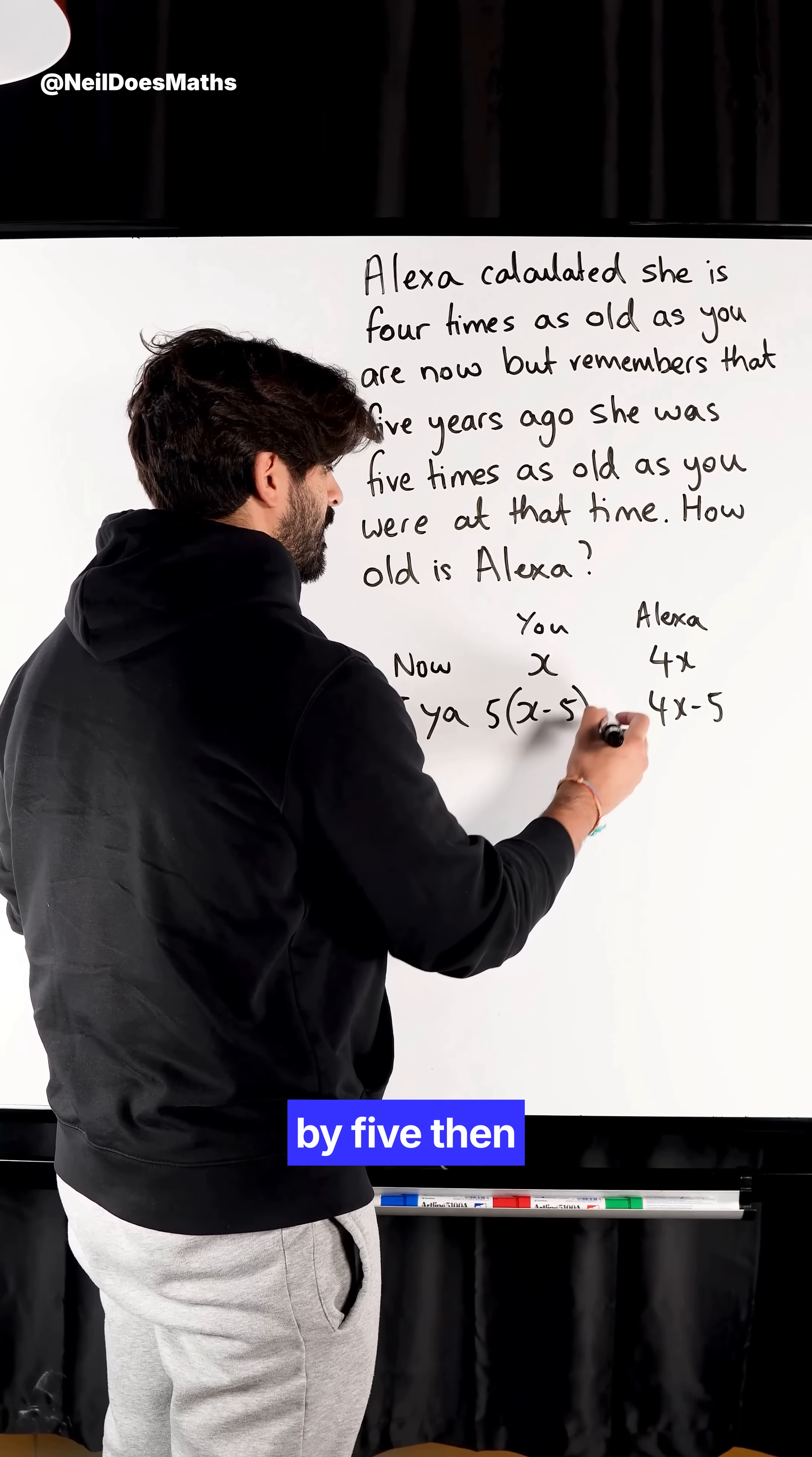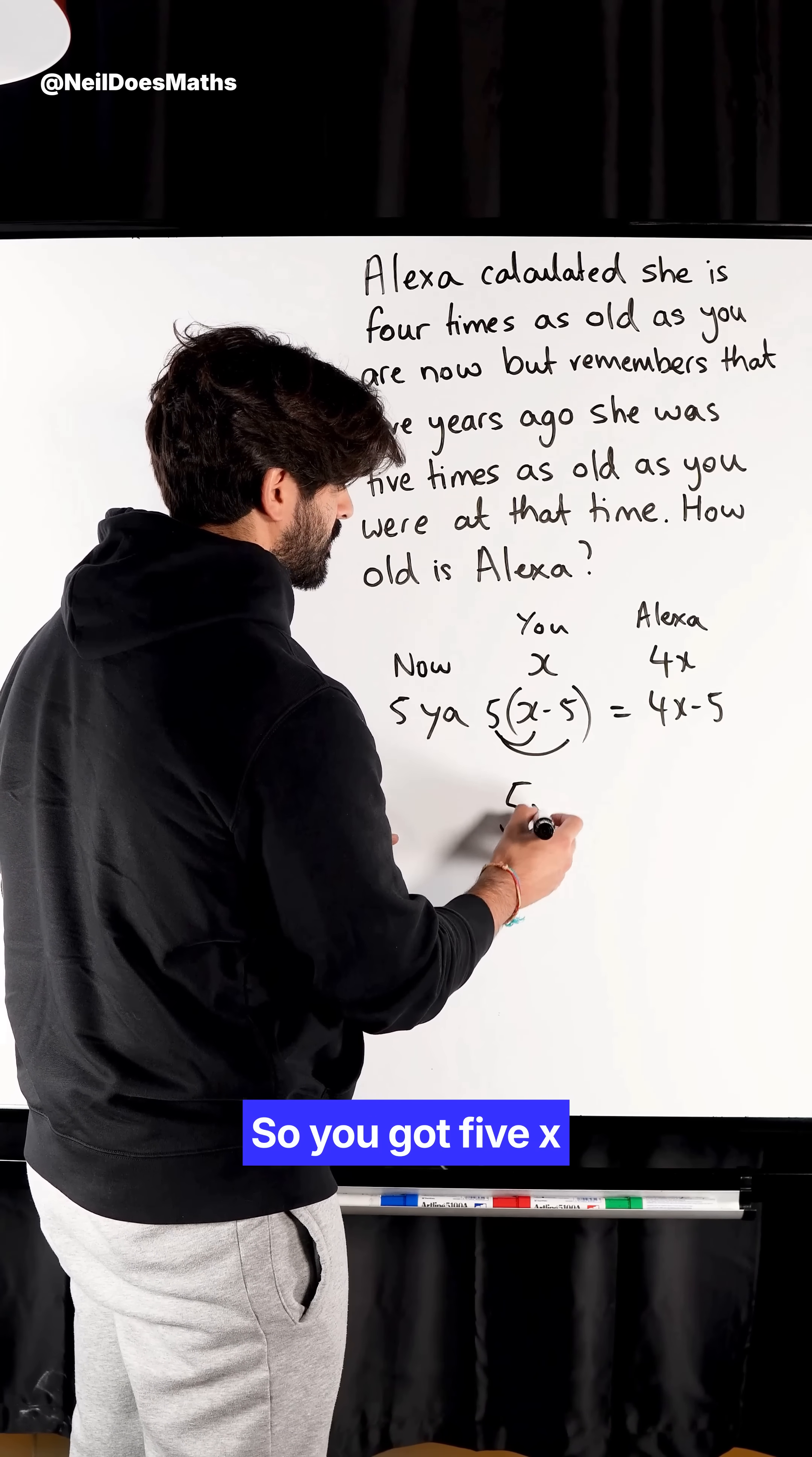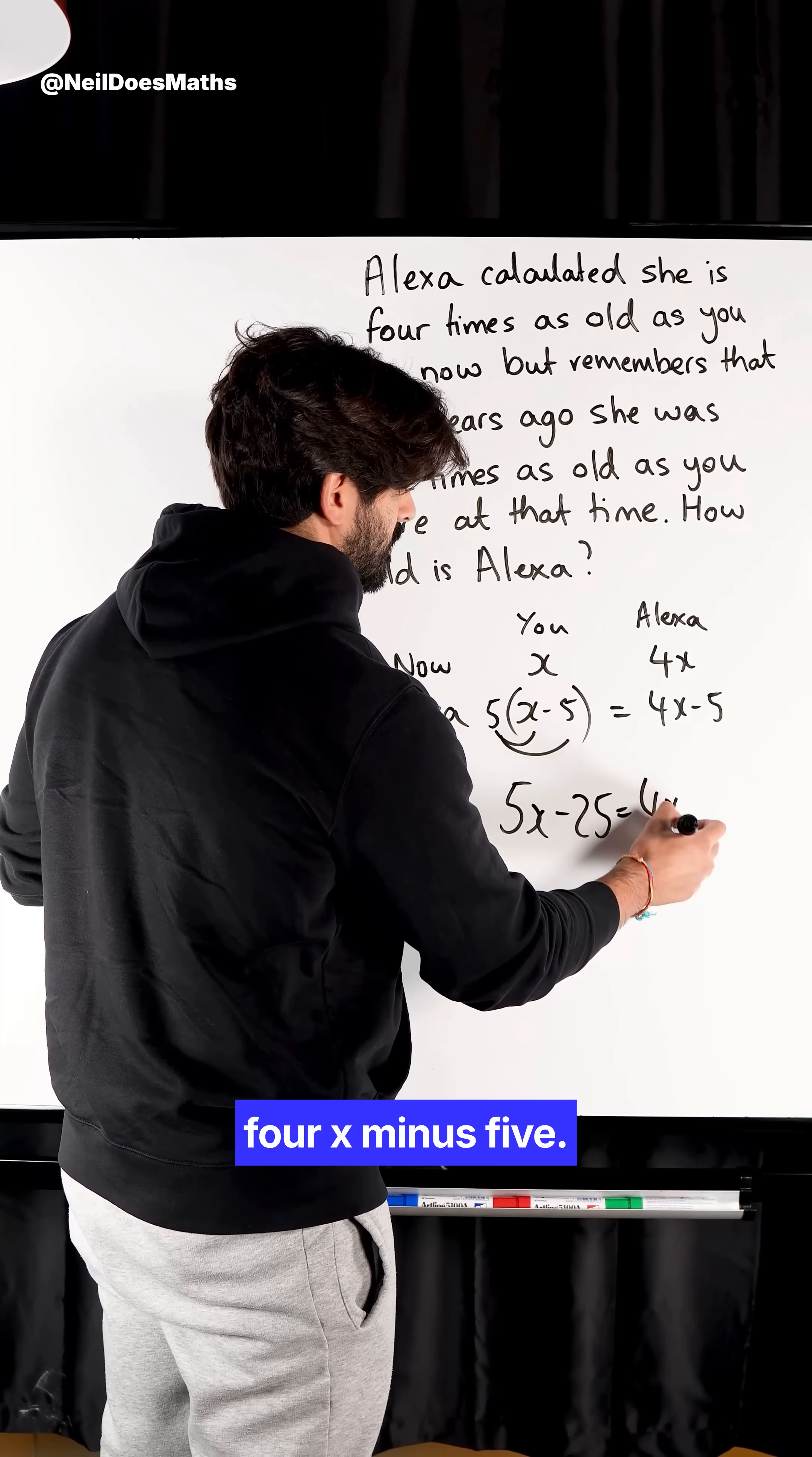So if we multiply this by five then, they will be the same. So now we need to solve. We need to expand the bracket. So you got 5x. Five times minus five is minus 25 is 4x minus 5.